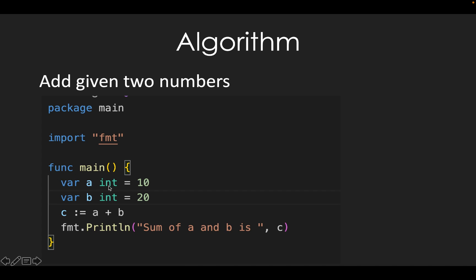What do we do? First, we declare two variables: variable A and variable B. We assign values to them — for example, assign 20 to A and a value to B. Then we add the two variables and store the result in variable C. Finally, we print the sum of A and B as the output.